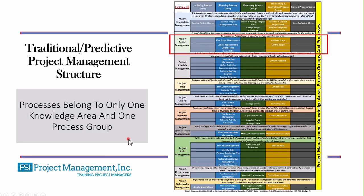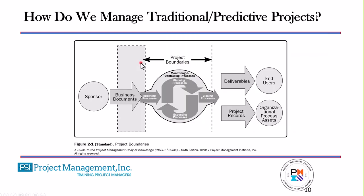Now in a traditional or predictive project, we have our 10-by-5-by-49 project management structure. We're going to focus on project scope management, which includes these processes: plan scope management, collect requirements, define scope, create WBS, validate scope, and control scope.